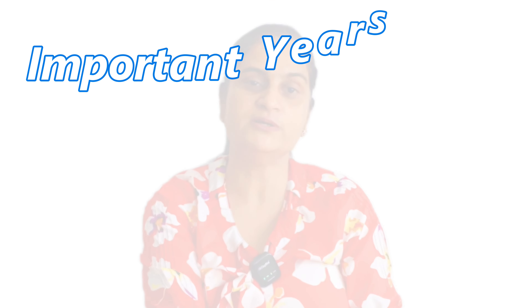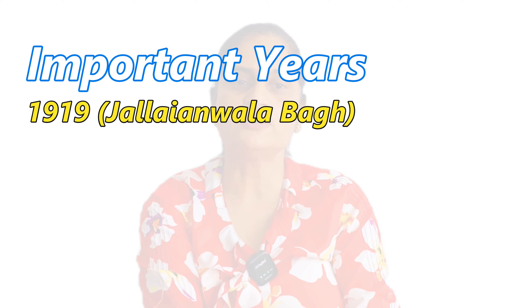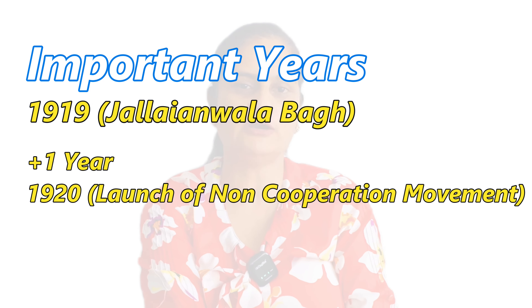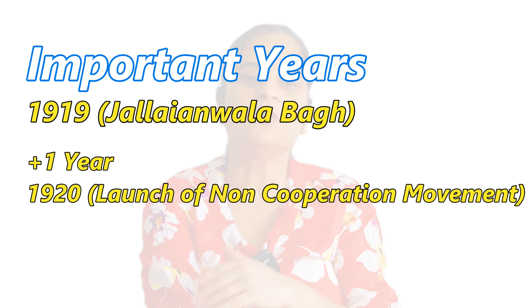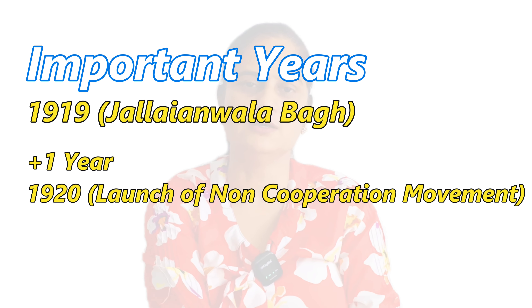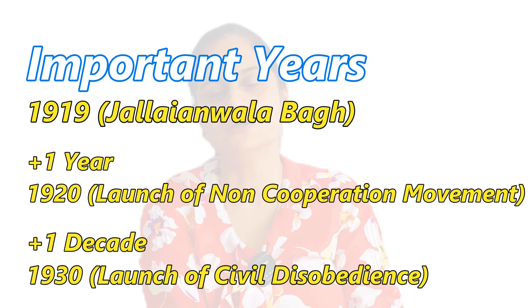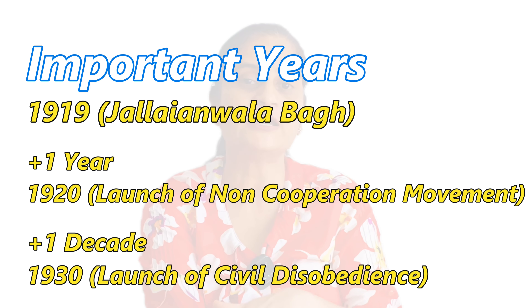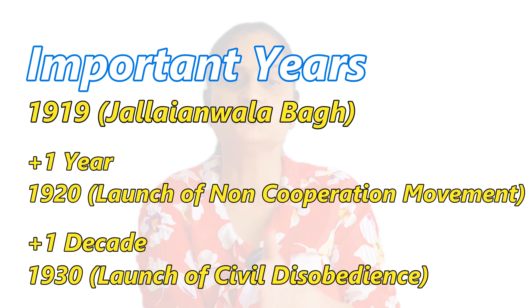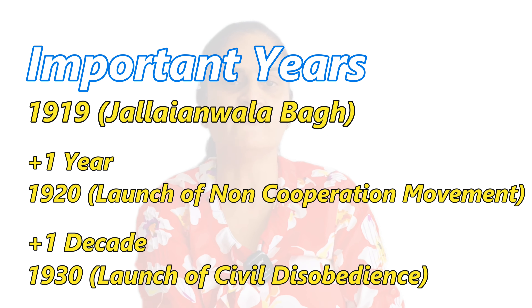Now, the years in which these movements were launched. Remember one year — Jallianwala Bagh 1919. Exactly one year after Jallianwala Bagh, the Non-Cooperation Movement was started, so that is 1920. After a decade of the launch of Non-Cooperation, that is 1920 plus 10, we get 1930 — which is the year of the launch of the Civil Disobedience Movement.